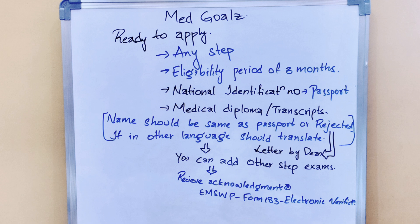The next thing to be careful about is medical diplomas and transcripts. Medical diplomas are for people who have graduated, and transcripts are for those who have not yet graduated. The name on the medical diploma or transcripts must match the passport name exactly, otherwise you will be directly rejected. For people whose names differ, you should take a letter from the Dean confirming that the names are the same and send it to ECFMG. If the diplomas or transcripts are in other languages, you should translate them.